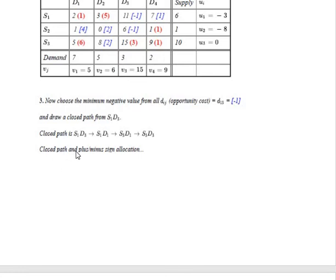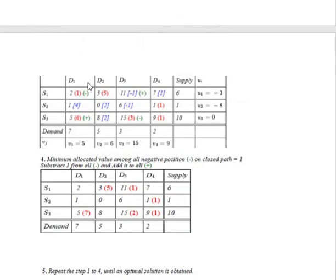On the closed path, we give plus and minus signs. The unoccupied cell (entering cell) gets a plus sign, then the next corner point gets minus, then plus, then minus, alternating around the loop. We draw this rectangle with the plus/minus allocation as shown in the table. Then, look at the cells with negative signs.